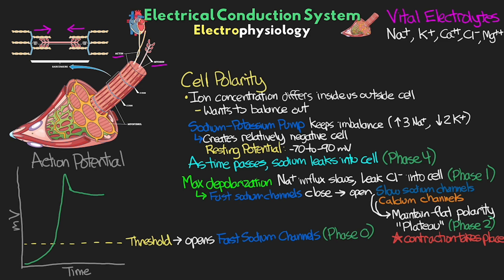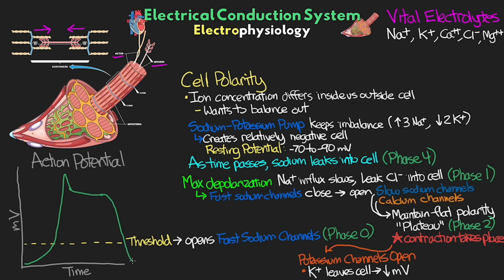Also, the more calcium that's available, the stronger and longer the contraction that we're going to see. From here, we start to have some potassium channels open, and this is going to allow potassium — which is at a higher concentration in the cell — to actually leave the cell, leading to a fairly quick drop in the polarity of the cell. You can see that here on our graph of the action potential, and this is what we refer to as phase 3.